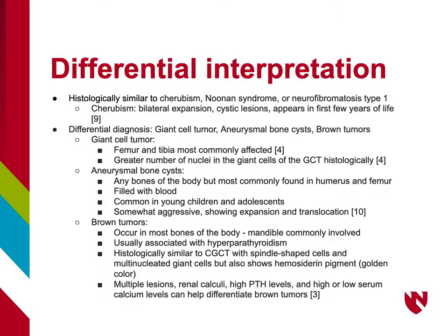Brown tumors can occur in most bones of the body, but the mandible is most commonly involved. Brown tumors are usually associated with hyperparathyroidism. They present similarly histologically to Central Giant Cell Granuloma, with spindle-shaped cells and multinucleated giant cells, as well as hemosiderin pigment, which is golden in color. Brown tumors present with multiple lesions, renal calculi, high PTH levels, and high or low serum calcium levels, which help differentiate them from Central Giant Cell Granuloma.